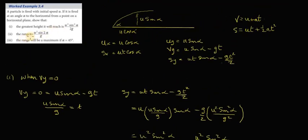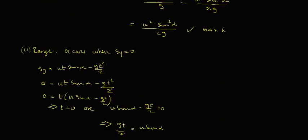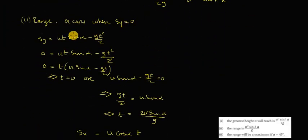Now we want to show that the range is equal to u squared sine 2a over g. The range happens when s of y is equal to 0. So similarly, let's get s of y. s of y is equal to ut, that's our formula. Rearrange that to let it equal to 0.